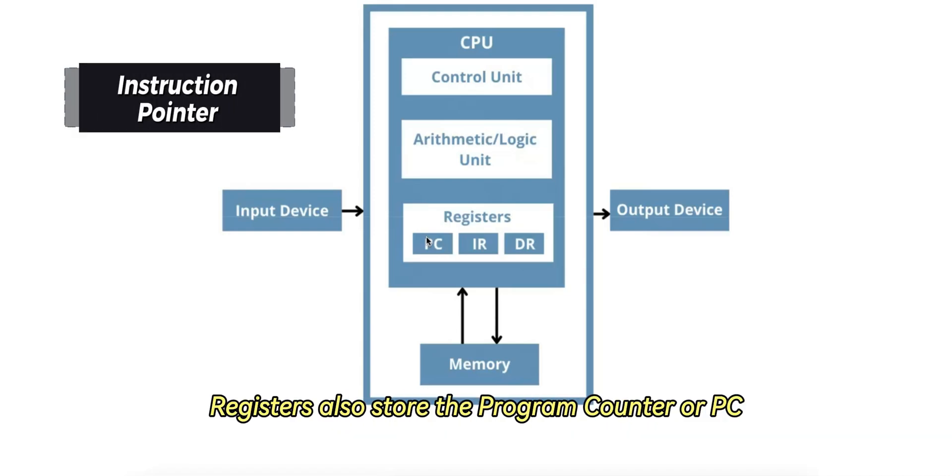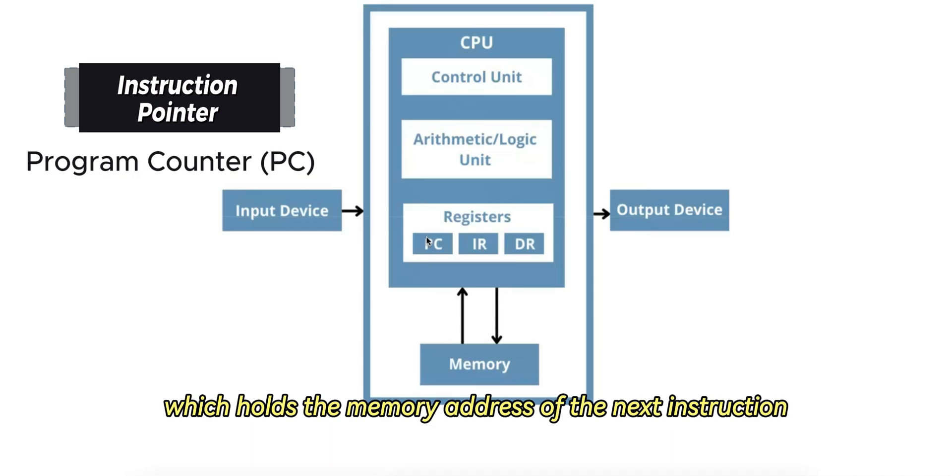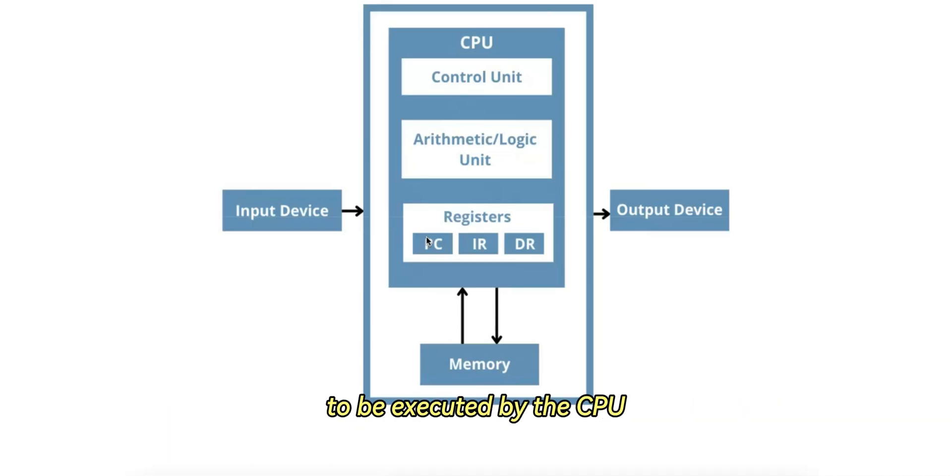Two is instruction pointer. Registers also store the program counter, or PC, which holds the memory address of the next instruction to be executed by the CPU.